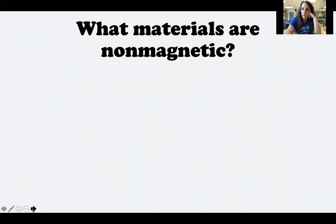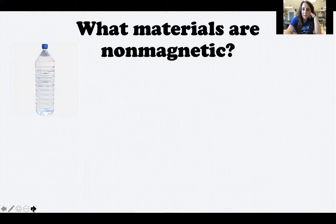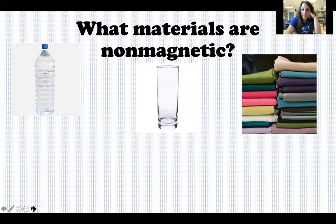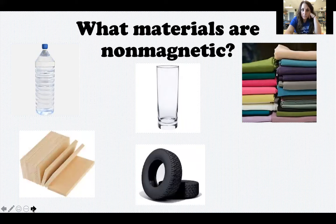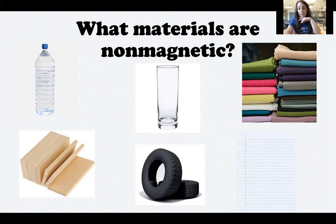What types of materials are non-magnetic? Plastic is not magnetic. Glass is not magnetic. Cotton or any type of fabric, wood, rubber, and paper — all of these materials are non-magnetic. That means that they will not be attracted to a magnet; they will not be pulled towards a magnet.